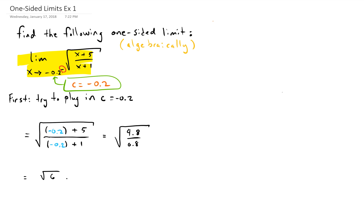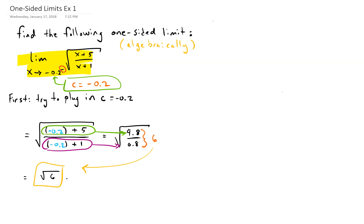We plug in negative 0.2 in the top and the bottom. Negative 0.2 plus 5 gives us 4.8. Negative 0.2 plus 1 gives us 0.8. 4.8 divided by 0.8 gives us 6. And that gives us our final answer, which is the square root of 6. Since we got a real number, we're done and we've found our limit.